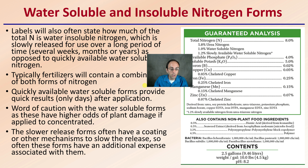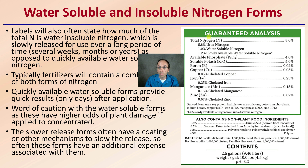The slower-released forms often have a coating or other mechanisms to allow that slow release to occur, so these forms often have an additional expense associated with them. Here's another example of a label. We're focusing on nitrogen, but there are other nutrients as well. In this case, there are also non-plant food ingredients included, as well as some bacteria.